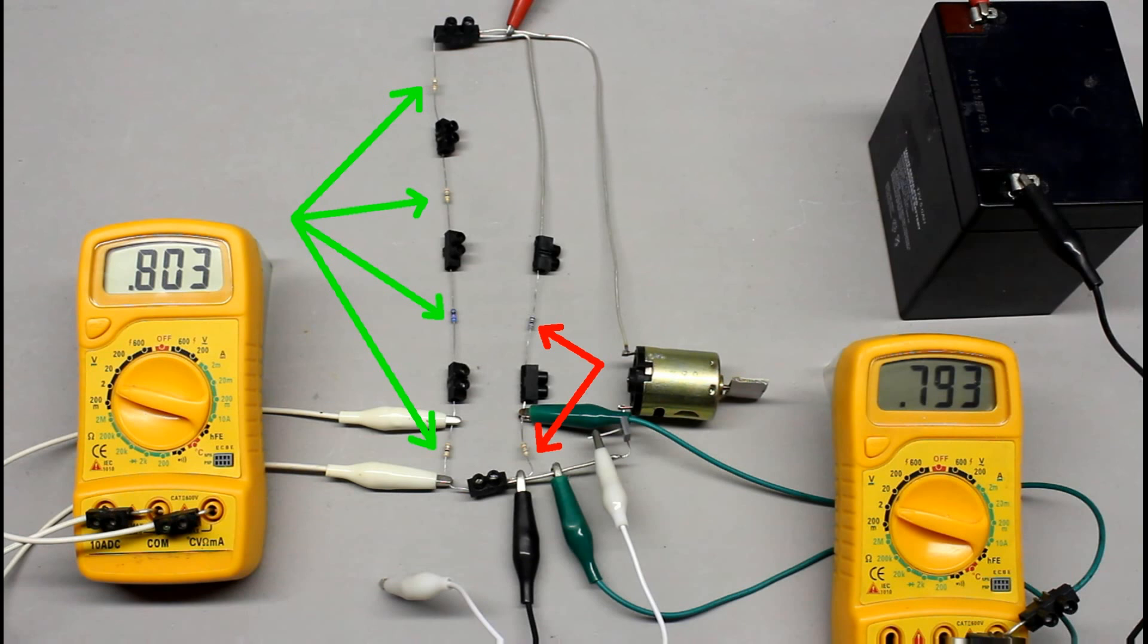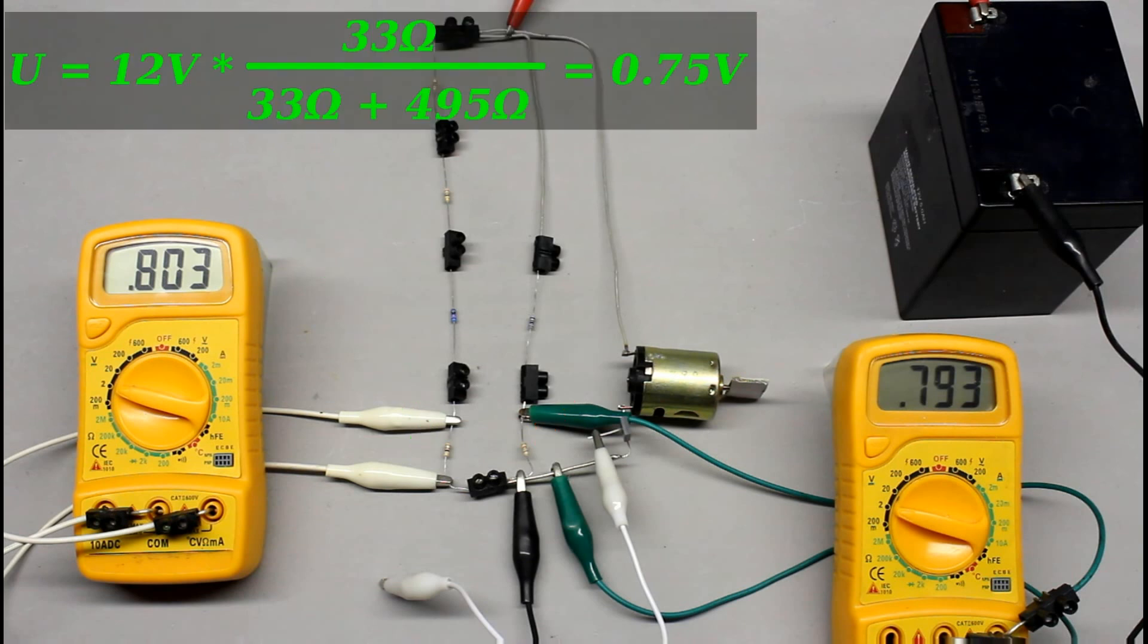A voltage divider can be built by using more than just two resistors. If an output voltage of 0.75V at an input voltage of 12V is required, while the total resistance of the network should be 528 ohm, a 33 and a 495 ohm resistor should do the job.